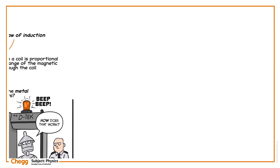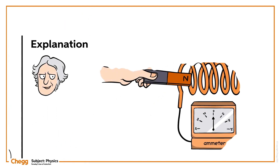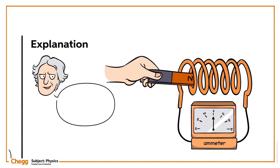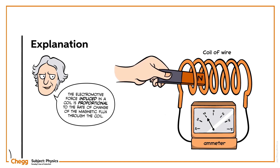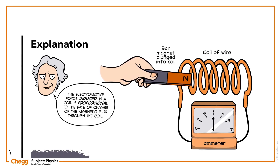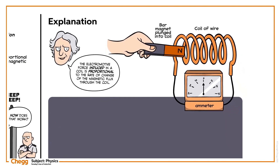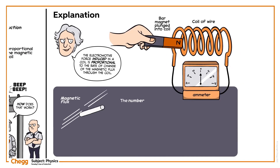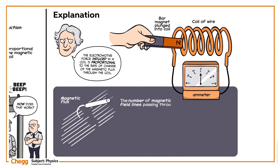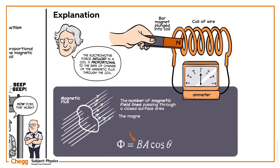Faraday's law of induction states that the EMF induced in a coil is proportional to the rate of change of the magnetic flux through the coil. Magnetic flux is the number of magnetic field lines passing through a closed surface area. Here B is the magnetic field through the closed surface of area A, and theta is the angle between the magnetic field and the normal to the plane of the loop.